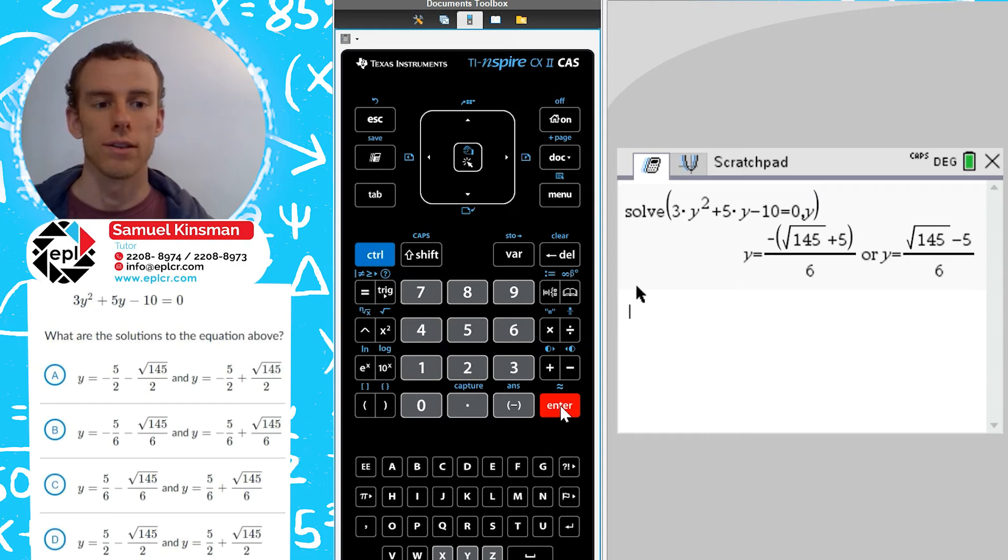Now, notice here that we'll have to rearrange these just a little bit to figure out which answer choice is correct. Notice that the first answer, if we distribute the negative and remove the brackets, then it's going to be minus five over six minus the square root of 145 over six.